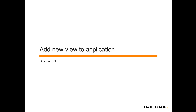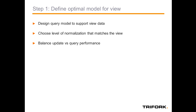So let's go with the first scenario: adding a new view to an existing application. This existing application does not use Axon yet, so we're going to introduce Axon and add a new view based on the Axon way of working. Step one is to define the optimal data model for that specific view — we need to find out what we want to render in that view and design the query model accordingly. Don't think about normalization here. Choose the level of normalization that matches the view. We've all been taught to normalize everything to third normal form, but that's not important right now.